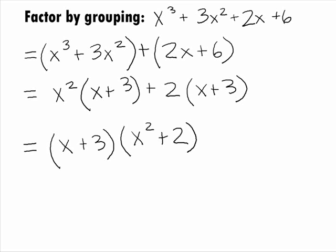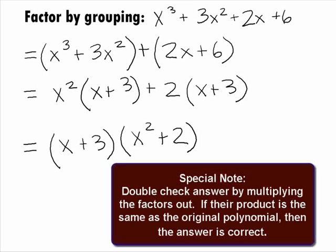Note that we can always double-check ourselves on factoring problems by multiplying out the factors that we have. If they multiply to be the original problem, then we have the right factors. If they don't, we need to go back and try factoring the problem again.